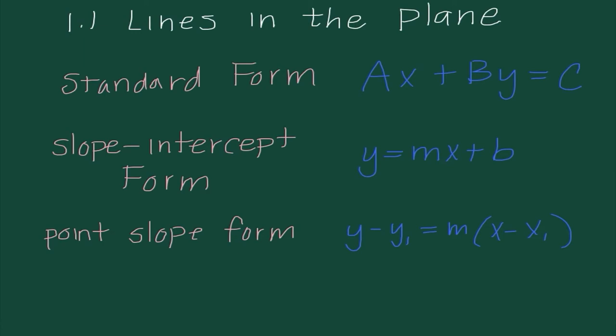The second form you really learned in Algebra 1 is slope-intercept form, which is Y equals MX plus B. In slope-intercept form, M, which is our coefficient for X, represents the slope, and B, which is the constant in the equation, is the Y-intercept. If something's given to us in that form, it's really easy for us to graph and see what's going on.